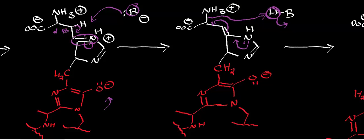If you remember, eliminations that were bimolecular in nature were a concerted process — proton transfer and loss of the leaving group happened simultaneously. Whereas E1s were stepwise, where you had proton transfer followed by some intermediate step and then loss of the leaving group. Looking at this mechanism, we had a proton transfer and then moved the double bonds around, so the proton transfer and the loss of the leaving group are in different steps — they are not concerted. So this is going to be an E1 mechanism — a unimolecular elimination.